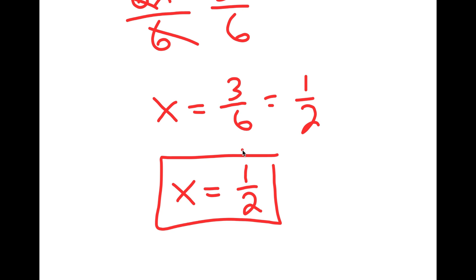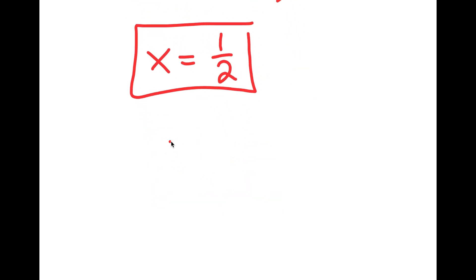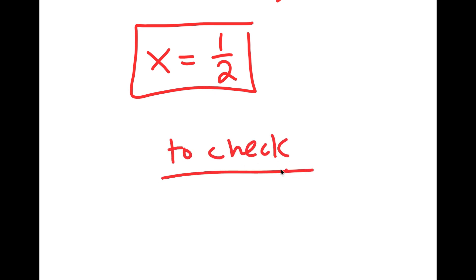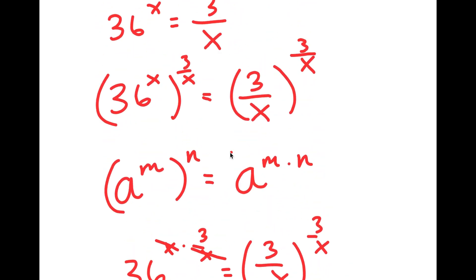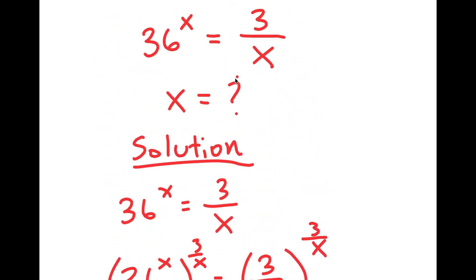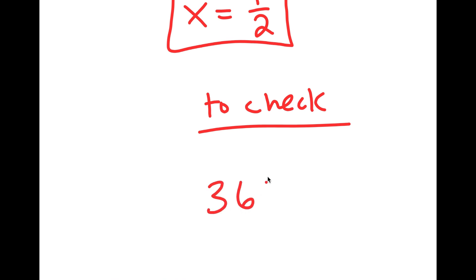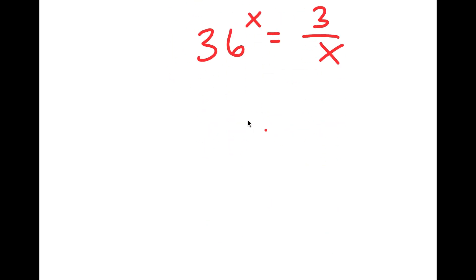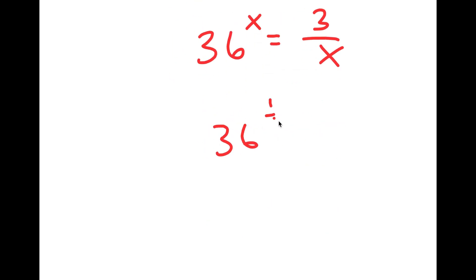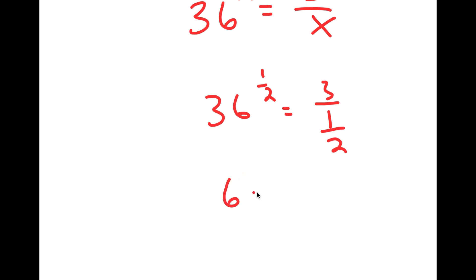To check: my equation was 36 to the power of x is equal to 3 over x. With x equals 1 half, I get 36 to the power of 1 half is equal to 3 over 1 half, which equals 6, is equal to 6. So the solution checks out.